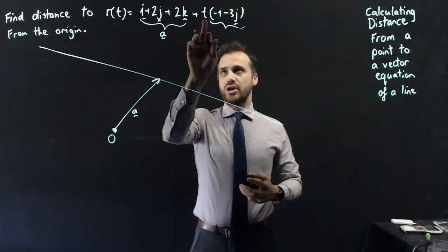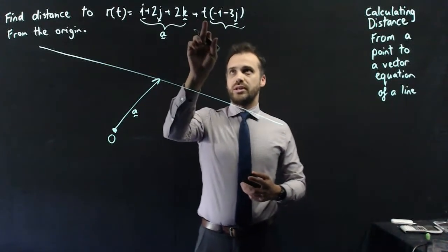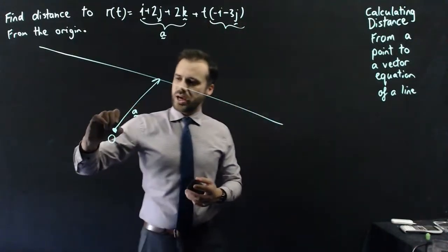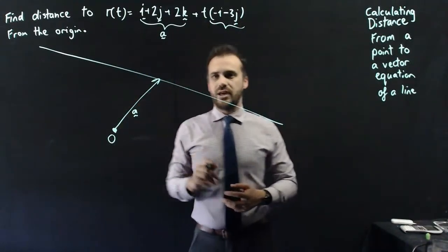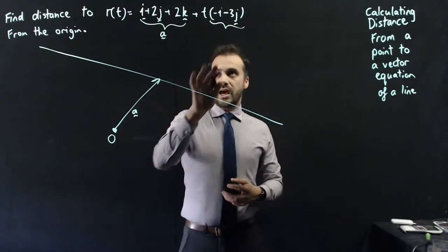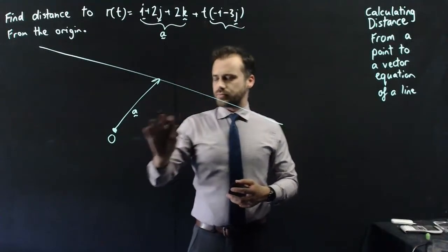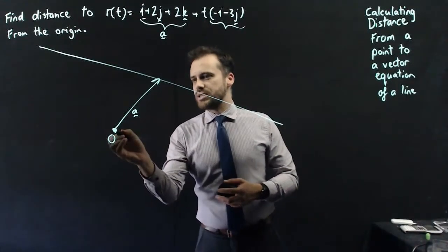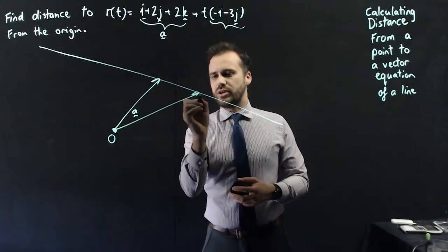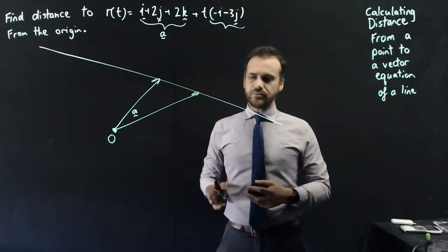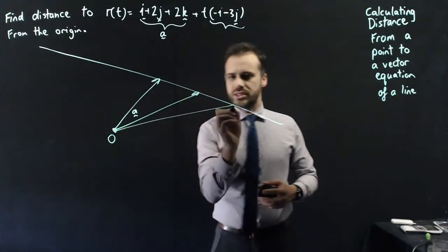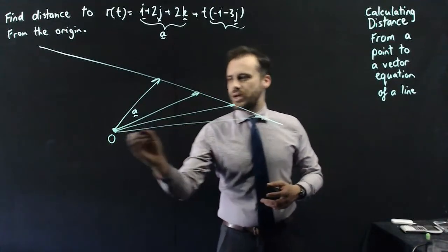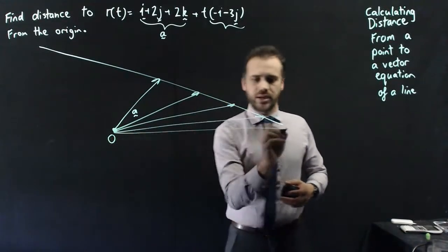We start at time 0. At time 0, the direction part doesn't exist, so what we have is a single vector like that. At time 1, we have a new vector somewhere further along the line. At time 2, we have some other vector further along the line, and at time 3 we have another one.